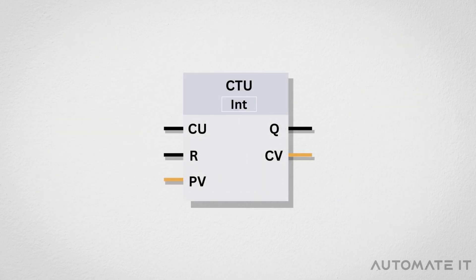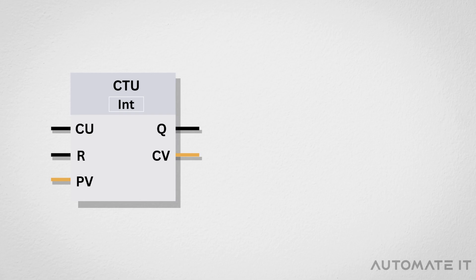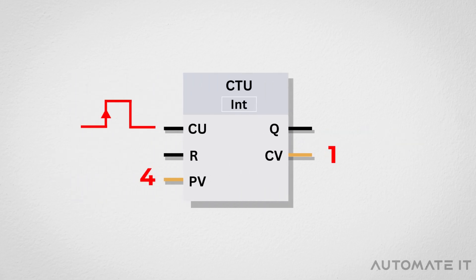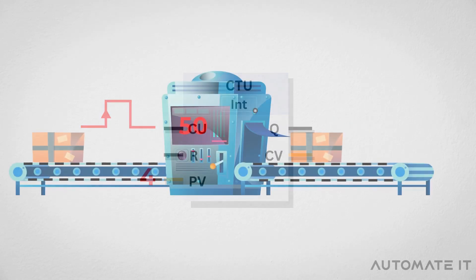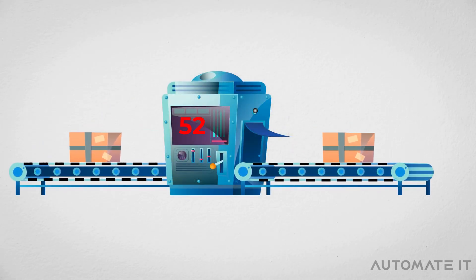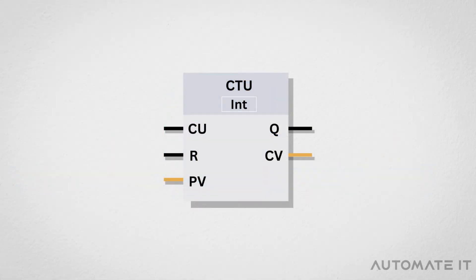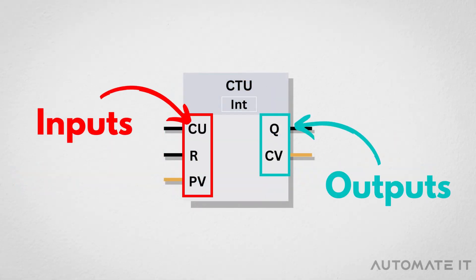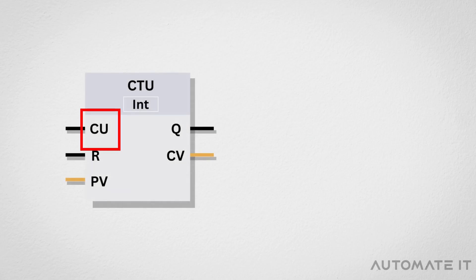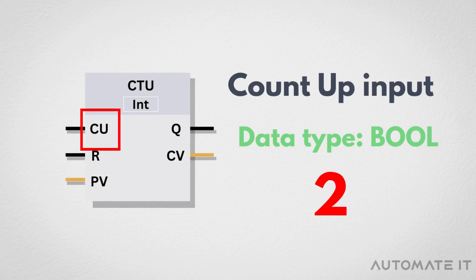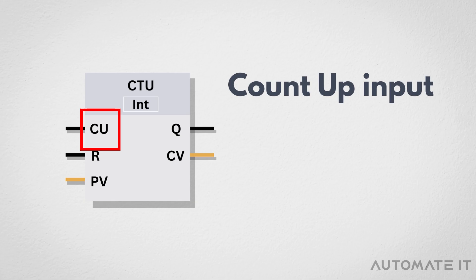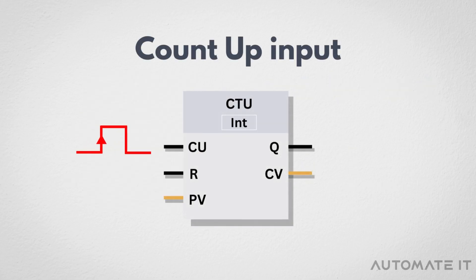First, let's talk about the CTU counter, which stands for Count Up. It increments its value each time it receives a positive edge input signal. It's suitable for counting events like the number of products on a conveyor belt. In TIA Portal, the CTU counter has three inputs and two outputs. CU is the input that triggers the counter to increment its value. It is usually a positive edge-triggered signal. When this input receives a positive edge, the counter value increases by 1.